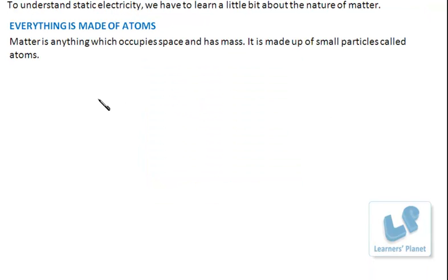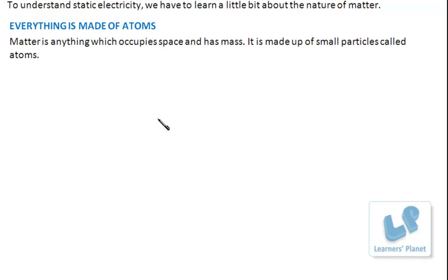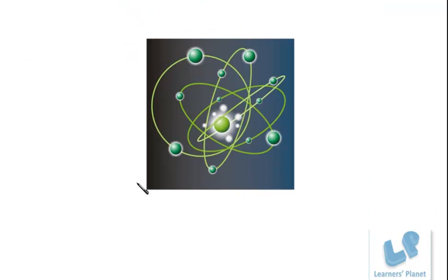Matter is anything which occupies space and has mass. Air is matter, water is matter, a pen is matter, a pen lid is matter — anything which has mass and occupies space. This matter is again made up of small particles called atoms. Now let's see what these atoms are made up of or composed of. Atoms are composed of neutrons, protons, and electrons.